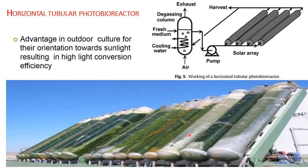Next is the horizontal tubular photobioreactor. It consists of horizontal tubes that hold the algal culture or can be used for wastewater treatment. It has an advantage in outdoor culture due to its orientation towards sunlight, resulting in high light conversion efficiency.